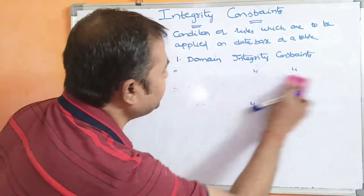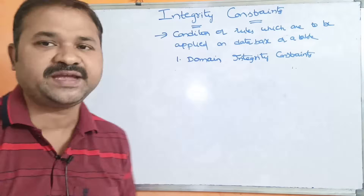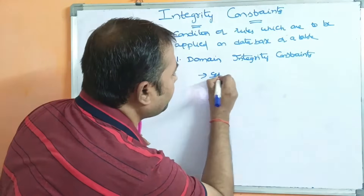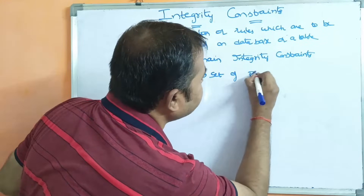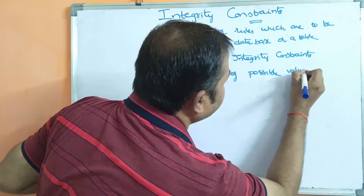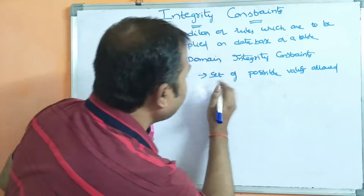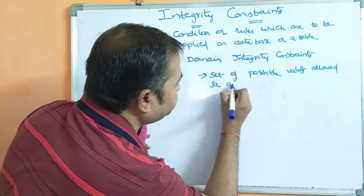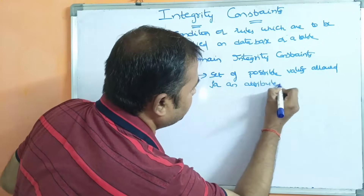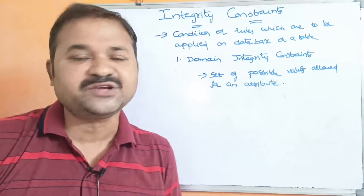Let us see the first one, that is domain integrity constraint. What is a domain? Domain means a set of possible values — the values allowed for an attribute. So, domain is nothing but attribute values.